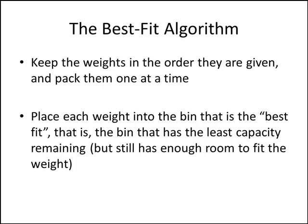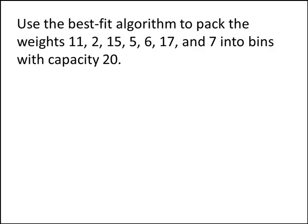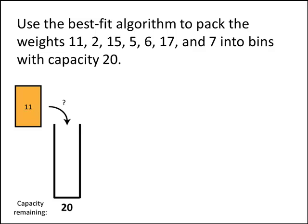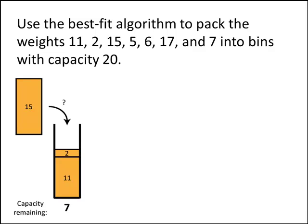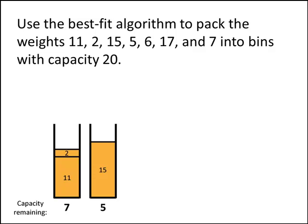The best fit choice will leave the least amount of room left over after we pack that weight. We start similarly to before: one empty bin with capacity 20, and our first weight is size 11. There's only one bin to choose from, so we pack it there. The next weight is size 2 — again only one bin, so we pack it there. Our next weight is size 15, but there's not enough room in our first bin, so we put it into a brand new bin. Now our next weight is size 5, and we have a choice.